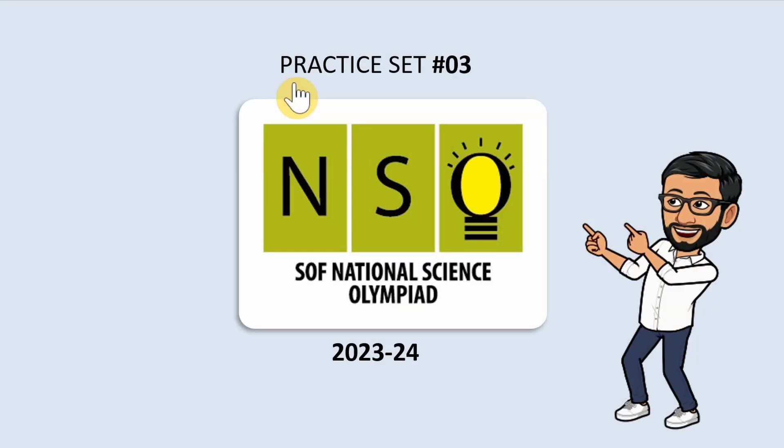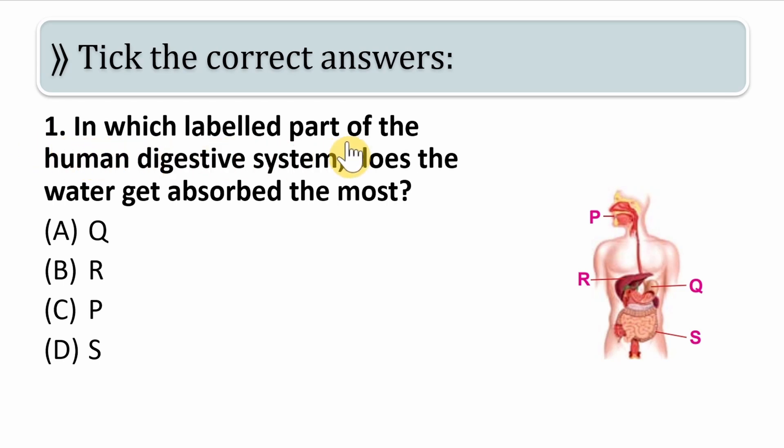Good morning students. Today we are going to solve practice set 3 from NSO, that is National Science Olympiad. Let us start with the first question: In which labeled part of the human digestive system does the water get absorbed the most?